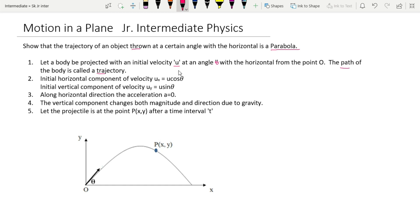The initial velocity u is divided into two components. The initial horizontal component of velocity is u_x, which equals u cosθ. The initial vertical component of velocity is u_y, which equals u sinθ. As shown in the diagram, the object is thrown at angle theta with the horizontal x-axis. The initial velocity u is resolved into two perpendicular components: u cosθ along the x-axis and u sinθ along the y-axis.